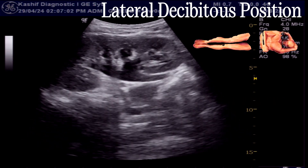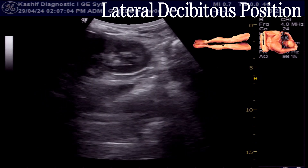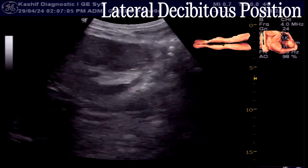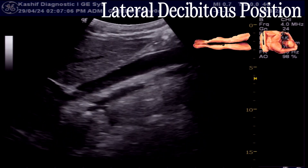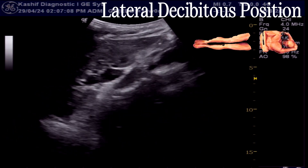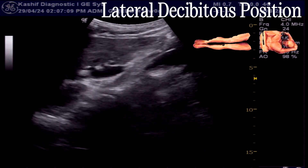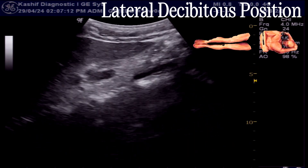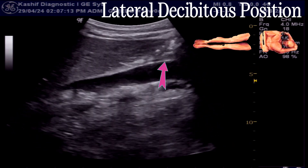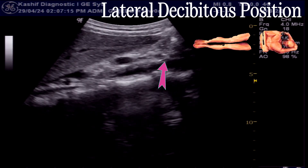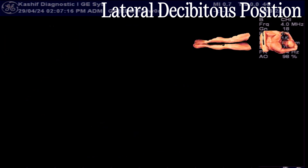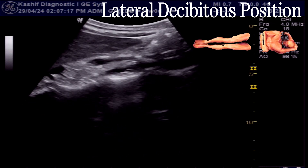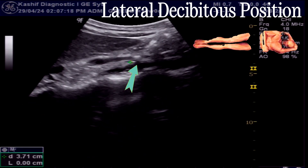In the same lateral decubitus position, continue to trace the ureter as seen — move the probe in the direction of the ureter. We see that in the upper third, a well-defined stone is visualized in the ureter.